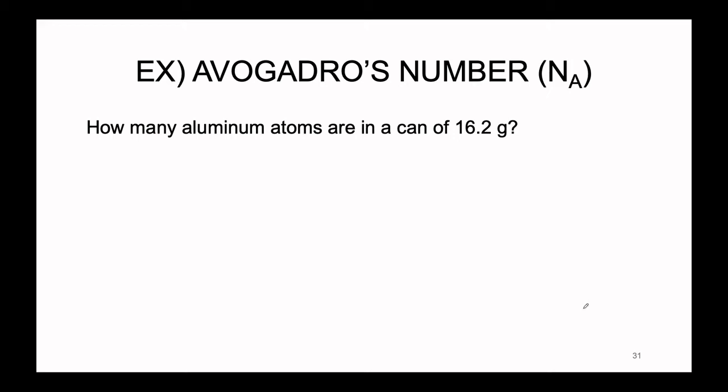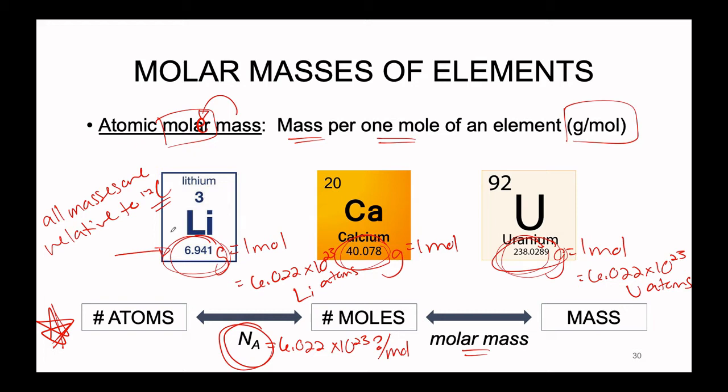Here's an example problem: how many aluminum atoms are there in a can that has a mass of 16.2 grams? This is the average mass of your aluminum can. So if you finish a beverage and you're holding the can, wondering how many aluminum atoms you're holding in your hand — we have the tools to calculate approximately how many aluminum atoms you have. We're going to start with what we know: the can has a mass of 16.2 grams. We are currently at the mass position in the flowchart.